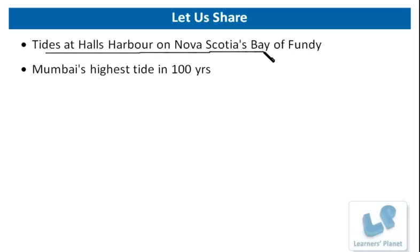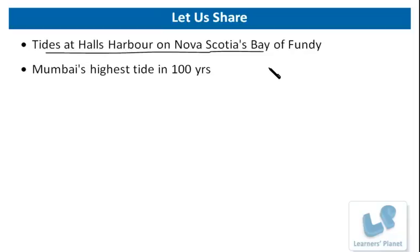Tides at Halls Harbour on Nova Scotia's Bay of Fundy: each day 100 billion tons of seawater flows in and out of the Bay of Fundy during one tide cycle — more than the combined flow of the world's freshwater rivers. This was one of the greatest news items of the 20th century. Visitors can see two extraordinarily high and low tides every 24 hours at the Bay of Fundy.